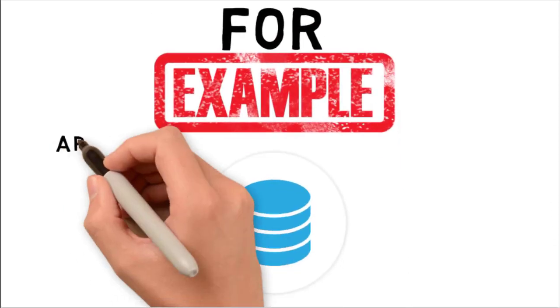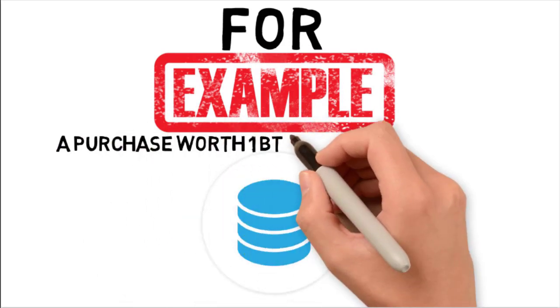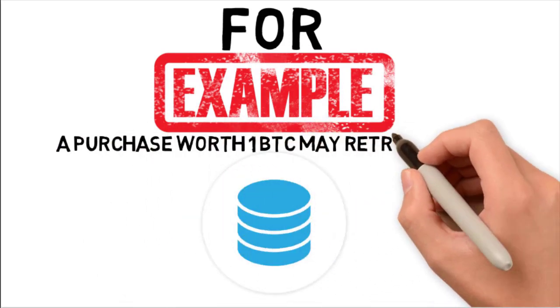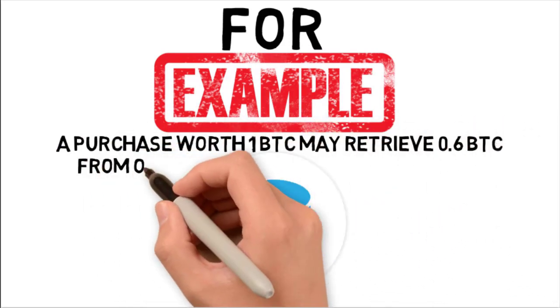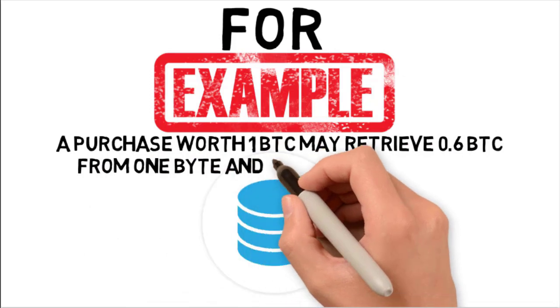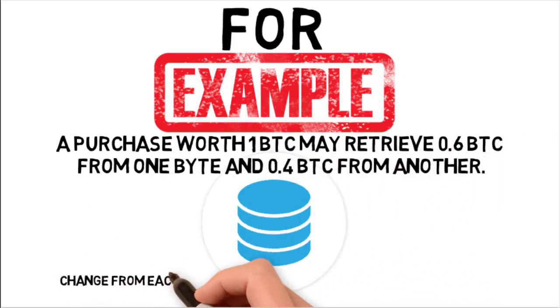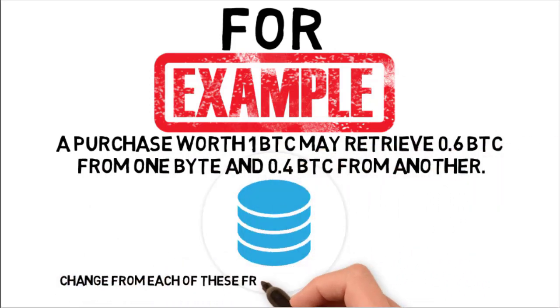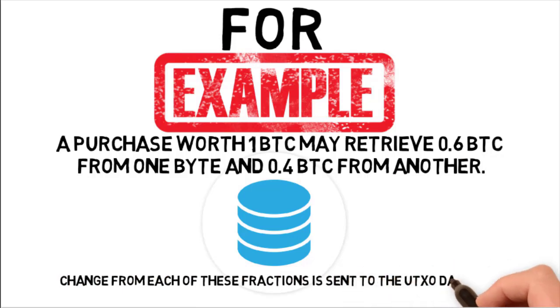For example, a purchase worth 1 Bitcoin may retrieve 0.06 Bitcoin from one source and 0.04 Bitcoin from another. Change from each of these fractions is sent to the UTXO database.